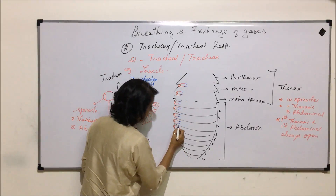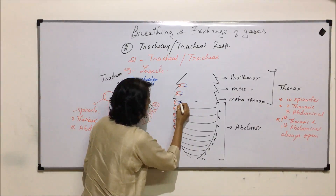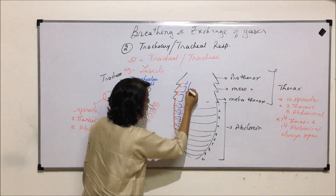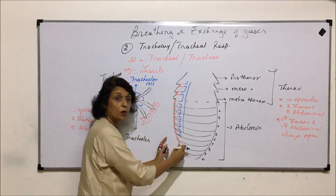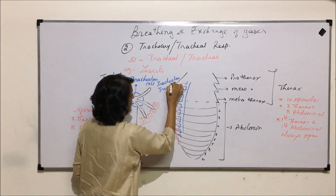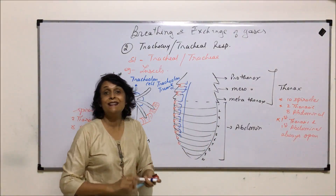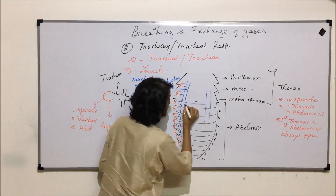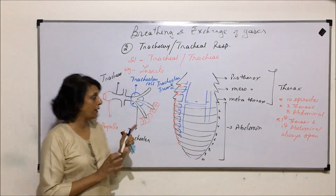The tracheoles start from here and they join to form a long tube — that means there is a trunk on two sides. This main branch is known as the tracheolar trunk. There are two lateral trunks running on each side, and these trunks are also connected with each other. So the air which is taken in through the spiracles actually goes everywhere in the body.